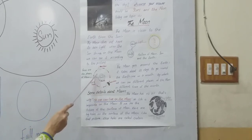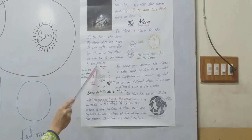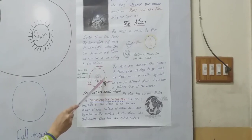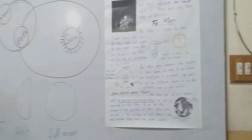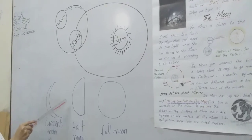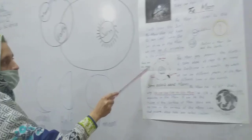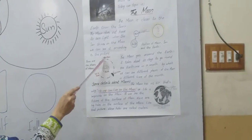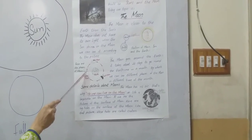When the moon revolves around the earth in a whole month, it changes its faces. New moon, half moon, and full moon - these are the phases: new moon, half moon, and full moon.